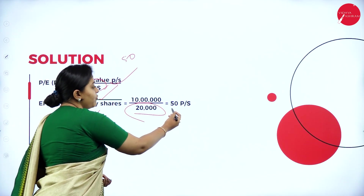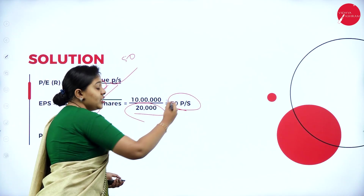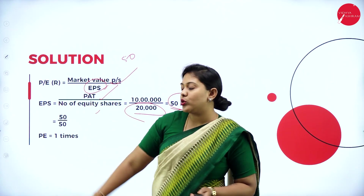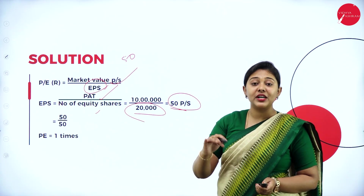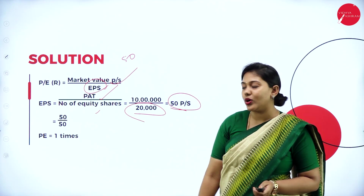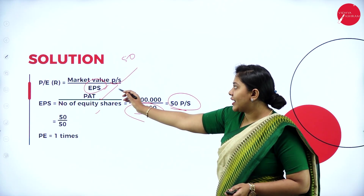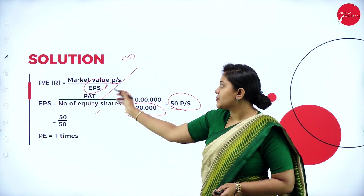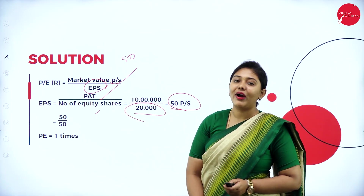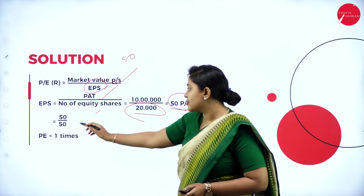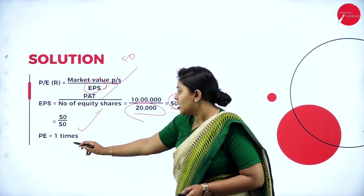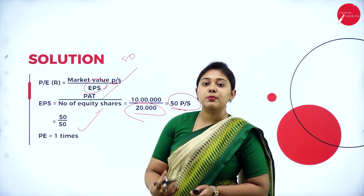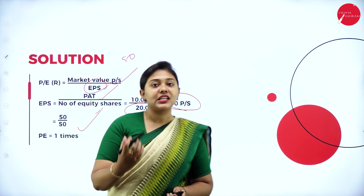Substituting 50 per share, EPS is calculated. Market value per share is also known to us. Substituting the values into the formula, the answer is 1 times. Price-to-earnings ratio is expressed in times.